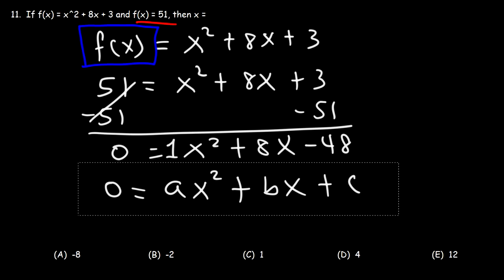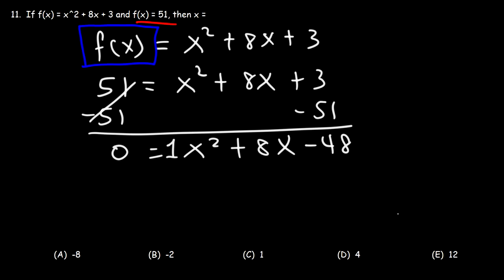So how do we factor this trinomial? We'll need to find two numbers that multiply to the constant term, negative 48, and at the same time add to the middle coefficient, 8.